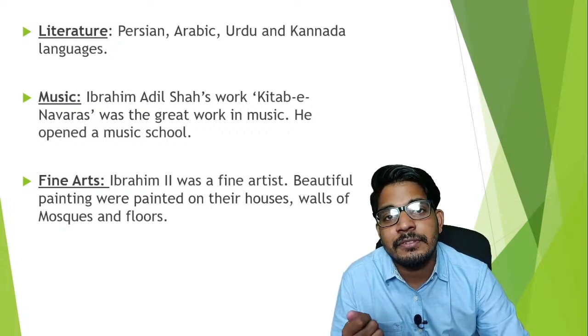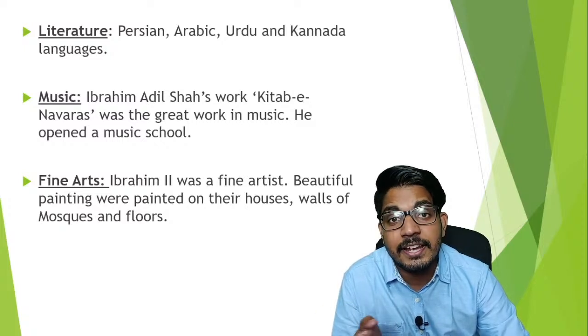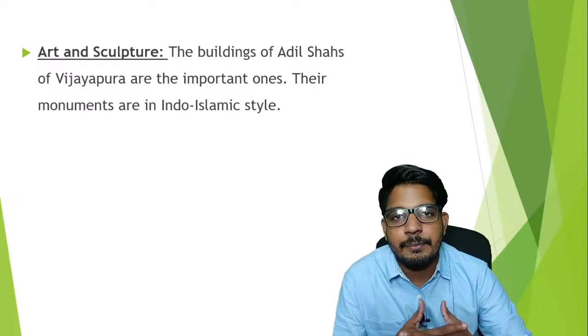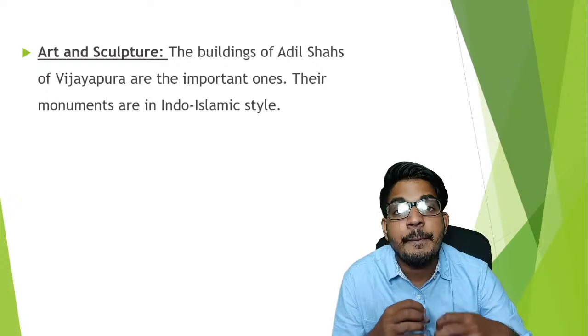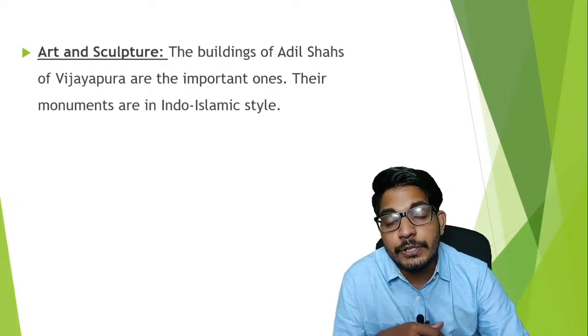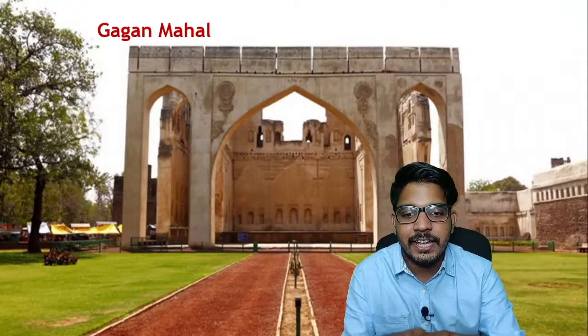The buildings of the Adil Shahs of Vijapur are the important ones, and most of their styles are based on the Indo-Islamic style. We start with Gagan Mahal — can you see the arches? The shape of the arches is a feature of Islamic architecture. Can you see the garden and the high compound wall? Gagan Mahal was built by Ibrahim Adil Shah in 1620.